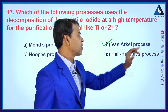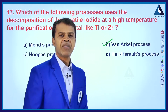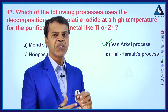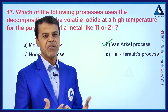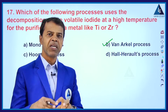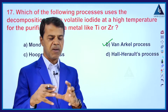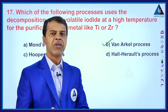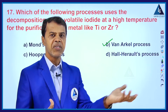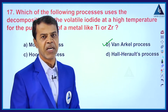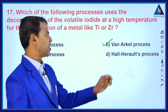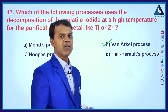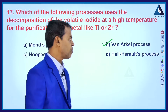The Van Arkel process is used to refine certain metals by using iodine. The impure metal is converted into a volatile iodide, and that iodide is then decomposed at a higher temperature to get the pure metal. That is the Van Arkel process.